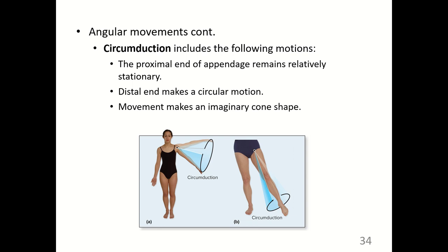Circumduction is seen at the ball and socket joints that are multiaxial. The proximal end of the appendage remains relatively stationary, the distal end makes a circular motion, and this movement creates an imaginary cone shape.